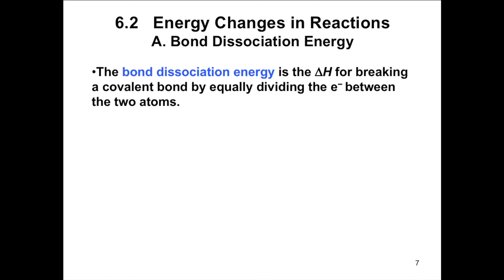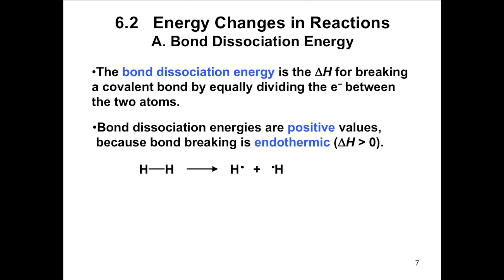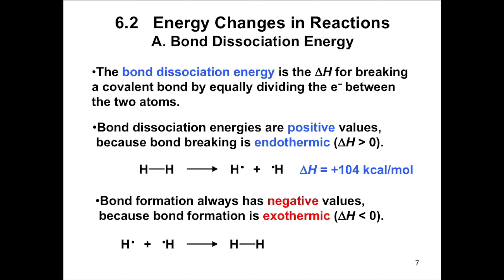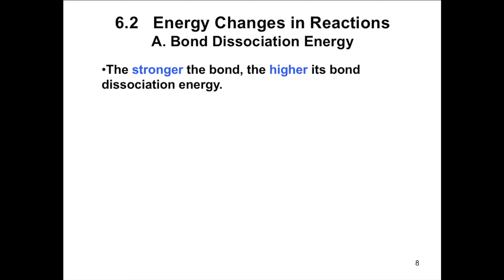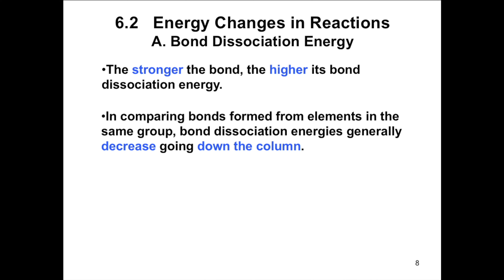The bond dissociation energy is the delta H for breaking a covalent bond by equally dividing the electrons between the two atoms. Bond dissociation energies are positive values because bond breaking is endothermic, while bond formation always has negative values because bond formation is exothermic. Bond dissociation energy tells us about bond strength — the stronger the bond, the higher its bond dissociation energy. Bond dissociation energies exhibit periodic trends, much like atomic radii and electronegativity. In comparing bonds formed from elements in the same group, bond dissociation energy generally decreases going down the column.